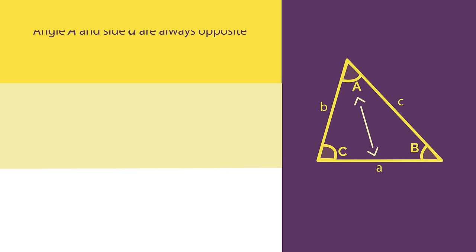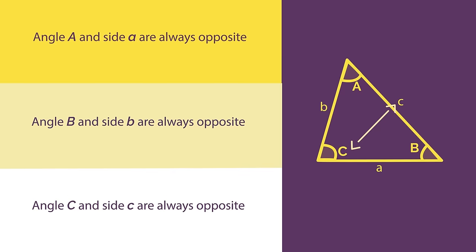And the side a and angle A are always opposite, side b and angle B are always opposite, and side c and angle C are always opposite. This is really important for both the sine and the cosine rule.